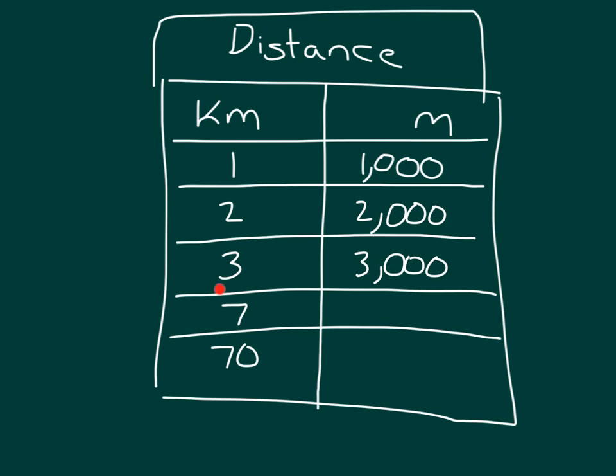What would 7 kilometers be? 7 kilometers is 7,000. Well, we have 70 here, which is 10 times as much as 7. What's 10 times as much as 7,000? We would have 70,000, or that's written as 70,000 meters.